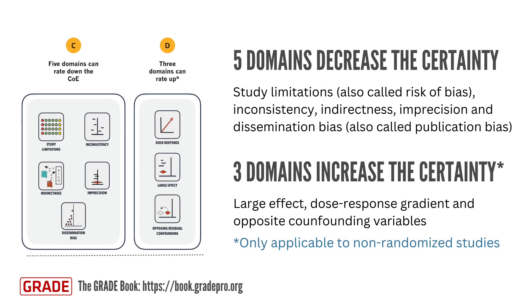After determining the starting point, the initial ratings are followed by detailed assessments across five domains that can lower certainty and three domains that can increase it. However, it's important to note that the domains used to increase the certainty apply only to non-randomized studies and should not be used to rate up the certainty of evidence from randomized trials. The five domains that can decrease the certainty are: study limitations, inconsistency, indirectness, imprecision, and dissemination bias, also known as publication bias.